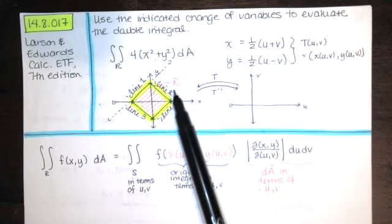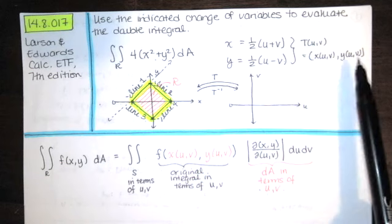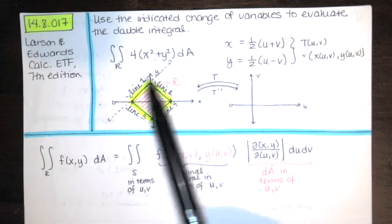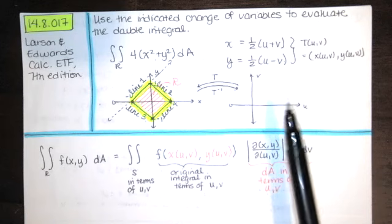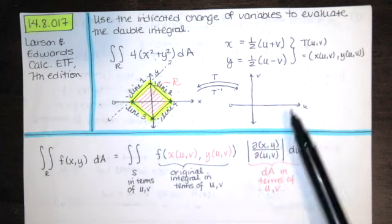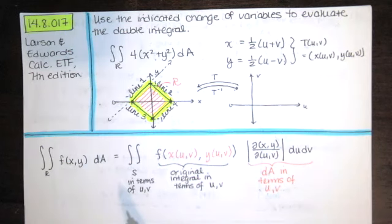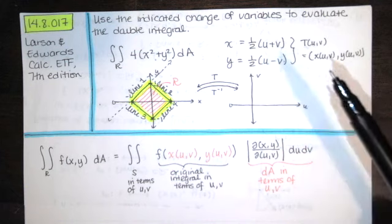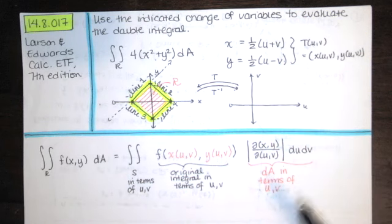The way we get that equivalent integral: we think about what the image of region R would be under the transformation. If this is the transformation that gets us from u, v to x and y, then there's an inverse transformation that gets us from x and y back to u and v. We call that image the region S, and then we integrate over S. Once we find S, we describe it with bounds for u and v. The integrand needs to be written in terms of u and v — replacing x with one-half of u plus v, and y with one-half of u minus v. The area piece dx dy becomes the Jacobian of the transformation times du dv.